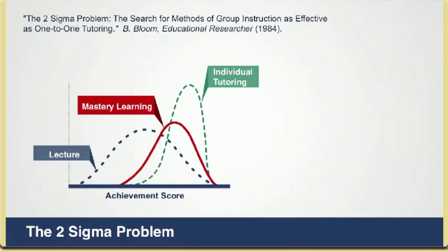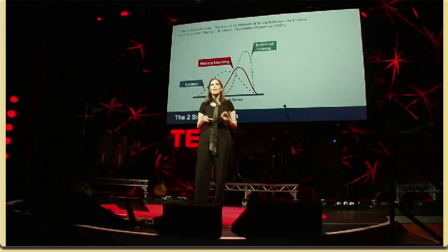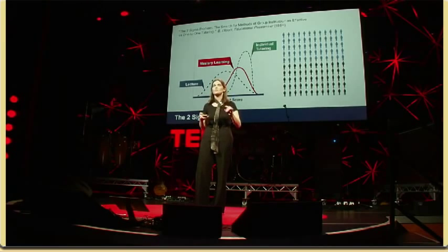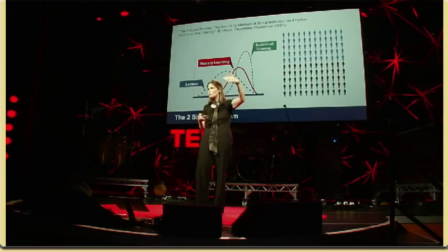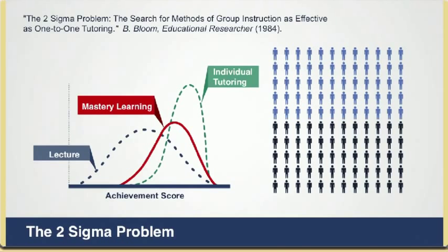The mastery-based population is a full standard deviation, or sigma, in achievement scores better than the standard lecture-based class. And the individual tutoring gives you two sigma improvements in performance. To understand what that means, let's look at the lecture-based classroom and pick the median performance as a threshold. So in the lecture-based class, half the students are above that level and half are below. In the individual tutoring instruction, 98% of the students are going to be above that threshold. Imagine if we could teach so that 98% of our students would be above average. Hence, the two sigma problem.